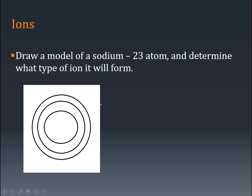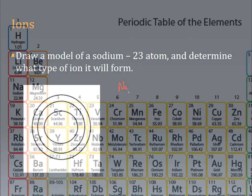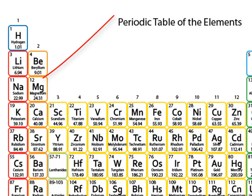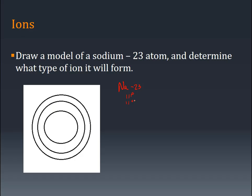So it says draw a model of a sodium-23 atom and determine what type of ion it will form. Well, sodium, if we go to the periodic table, has symbol Na. Sodium-23—but all sodium atoms have 11 protons. That also means 11 electrons, and that also has 12 neutrons. So in the nucleus, 12 neutrons, 11 protons, and then I can start putting in my electrons. Two electrons fit on the first energy level, eight electrons fit on the next energy level, and that gets me a total of 10 electrons.